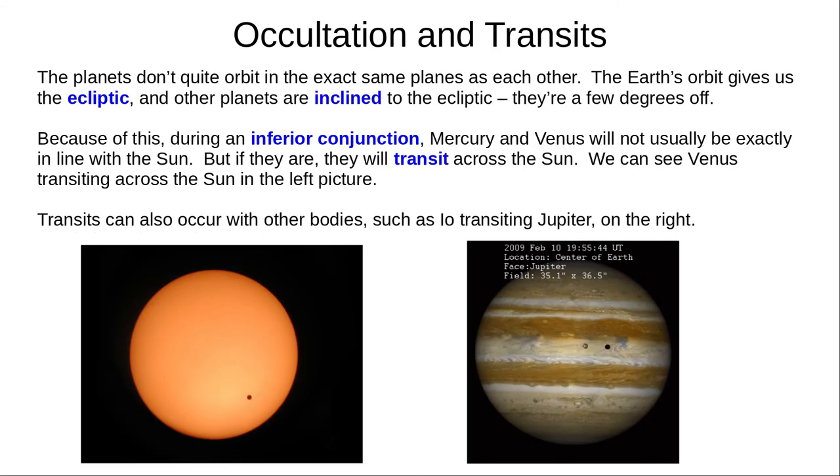As we mentioned earlier, the planets' orbits aren't quite in the same plane as the Earth's orbit. They are inclined to the ecliptic, typically a few degrees off. And so, when Mercury and Venus are at inferior conjunction, they're usually not exactly in line with the Sun. But when they are, they transit across the Sun. We can see this with specialised equipment, as in the left image of Venus transiting across the Sun. Transits can also occur with other bodies. And on the right, we can see Io transiting across Jupiter and casting its shadow on the clouds below.